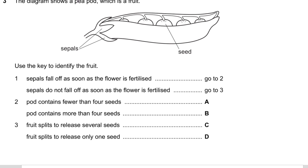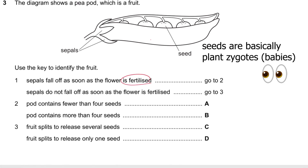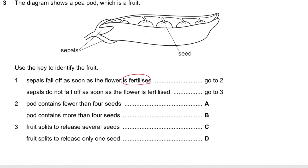Question 3: The diagram shows a pea pod, which is a fruit. Using the key: sepals fall off as soon as the flower is fertilized, but the sepals are still there, so they do not fall off. Moving to step three — the fruit splits to release several seeds; we have five seeds, so it is several seeds and not one.